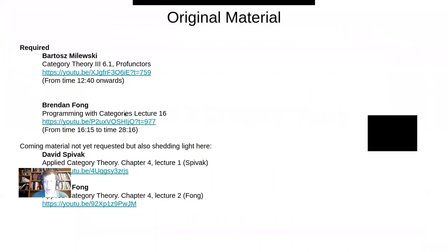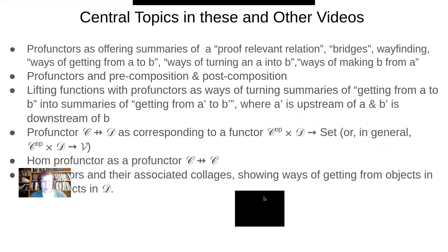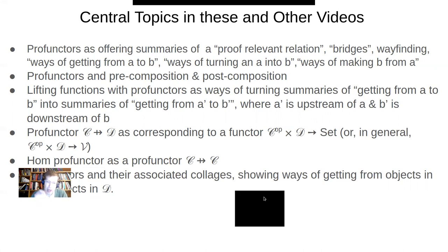We're building on material covered in lectures by Bartosz Milewski and Brendan Fong, leading up to the 2019 Applied Category Theory course at MIT. Within this sphere, profunctors can be seen through many interpretive lenses. They provide a set of proof-relevant relations between an object A and an object B, potentially in another category — a bridge between categories, a way of getting from an A to a B, or how much it costs to get from A to B, or whether it's possible.